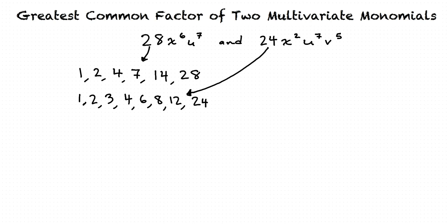So the greatest common factor is the greatest number that is common in both lists of factors. In this case, we can see that the number 4 is the greatest common factor of 28 and 24.